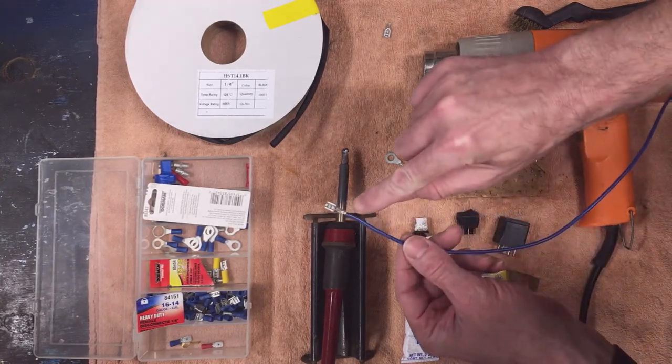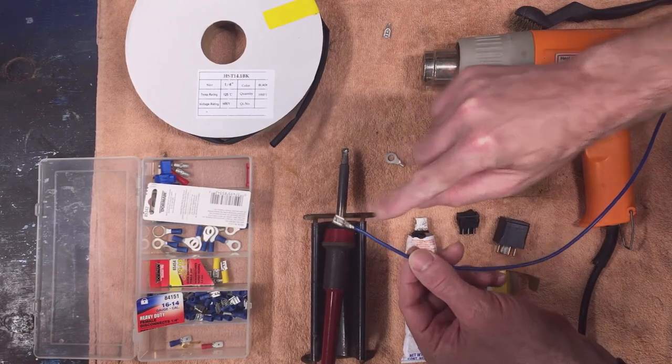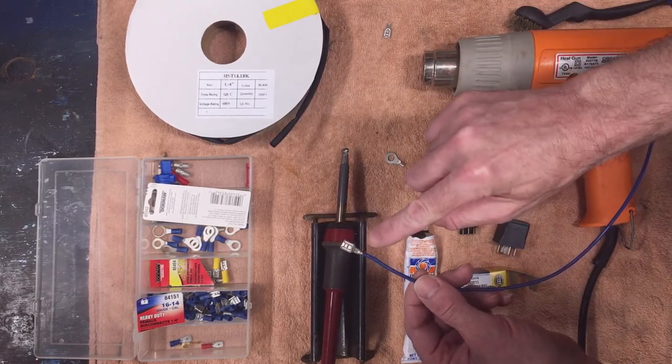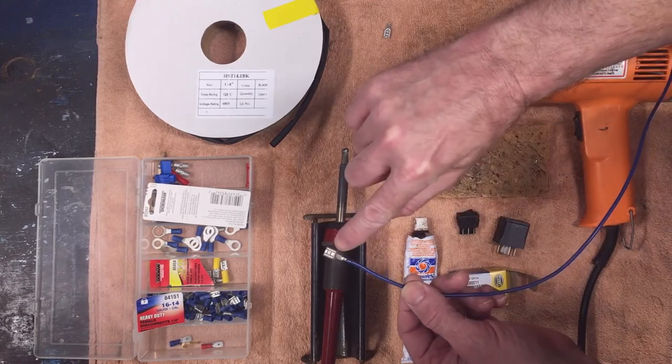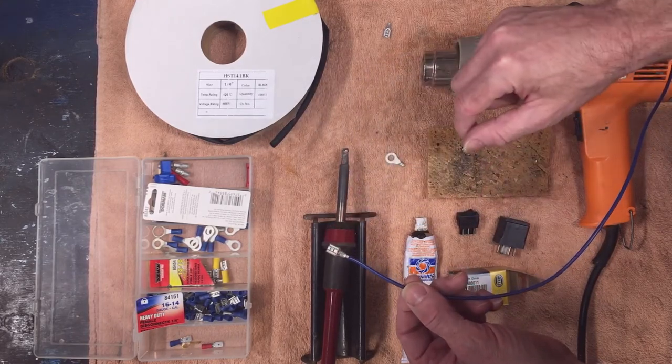I melted some of my insulation right there. You want to attempt to not melt any insulation but that's okay. I got a good solder joint and I didn't get any solder down into my electrical connector there where my blade terminal is going to go.